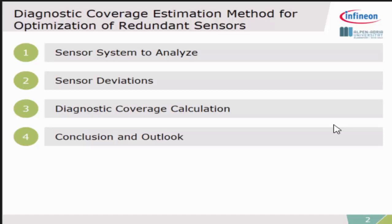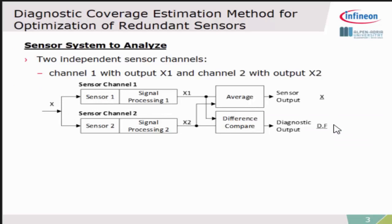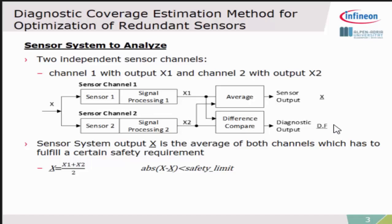This is the sensor system we need to analyze. This was actually a real request of one of our integrated sensors. We developed a sensor with two channel paths, single path 1 and 2, and now there is the diagnostic function which is used to take the difference and also the sensor output where we take the average. The original function for the output means taking both signals, add them and divide them.